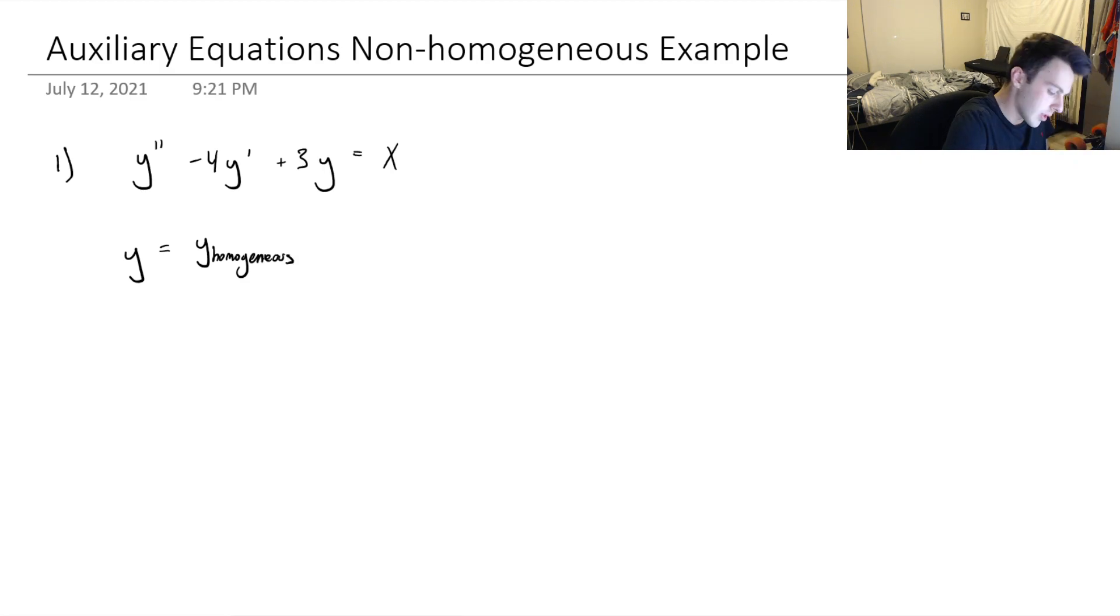which is essentially how the solution is influenced by the left-hand side. And then we've got the right-hand side. So how does this function on the right-hand side influence the solution? And that part of our solution is called the particular solution.